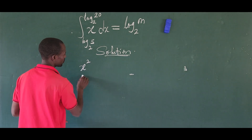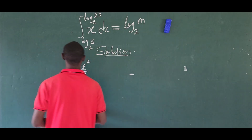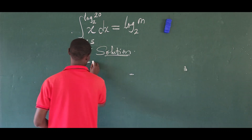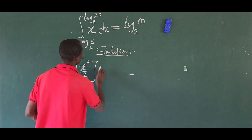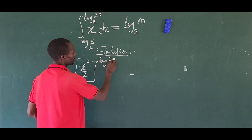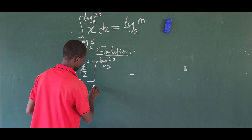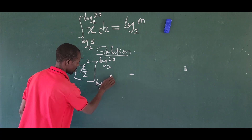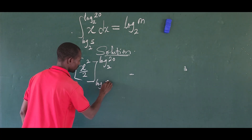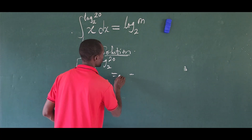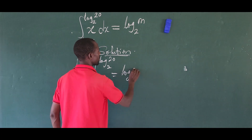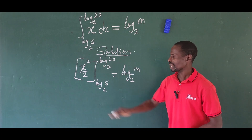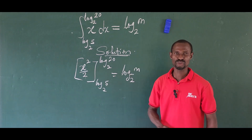So we have x squared over 2 within the limits. The upper limit is log 20 base 2 and the lower limit is log 5 base 2. This all equals log m base 2.